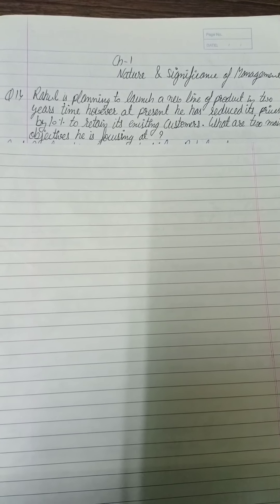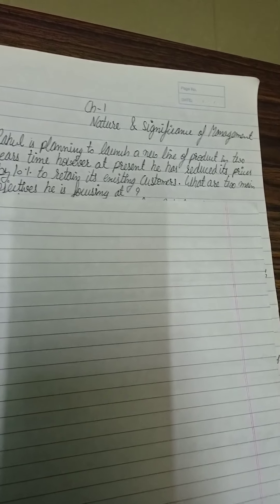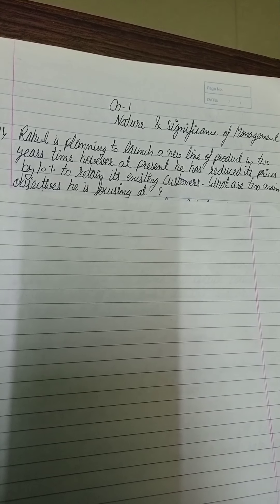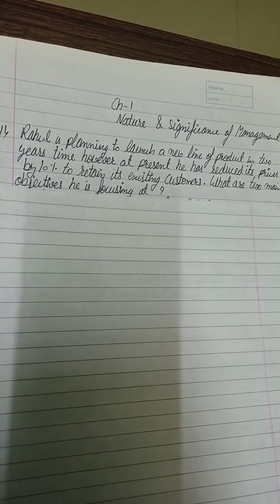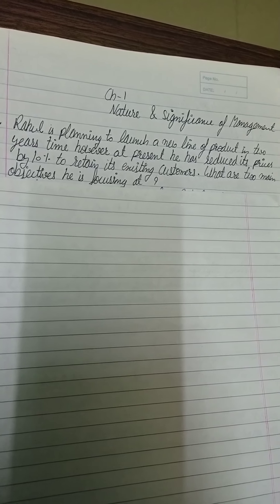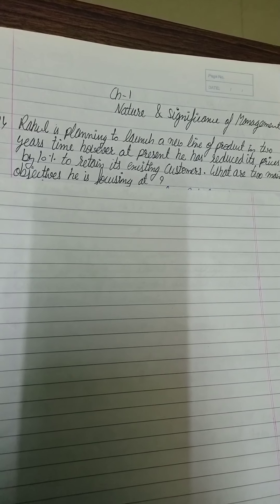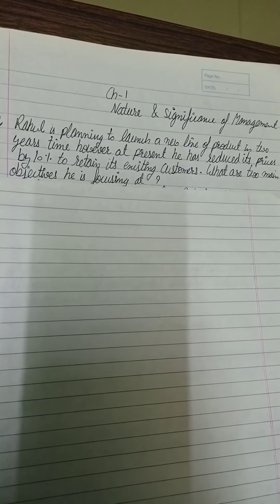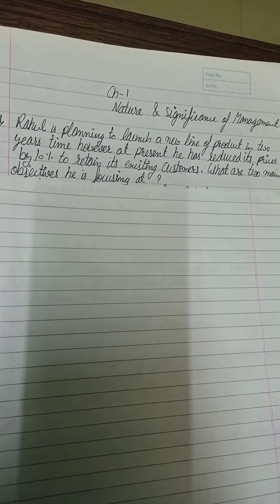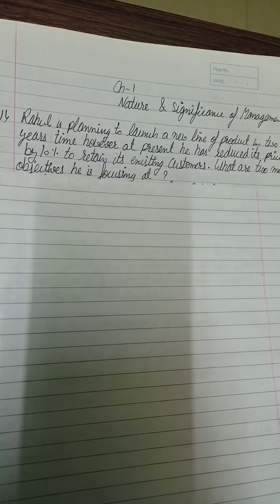The next term is 'state,' which means explain it. If the name is given in the question, you have to mention the name and explain according to the number of points asked. Two important terms are 'meaning' and 'significance' — note that significance and importance are the same, so when asked about importance, treat it as significance.